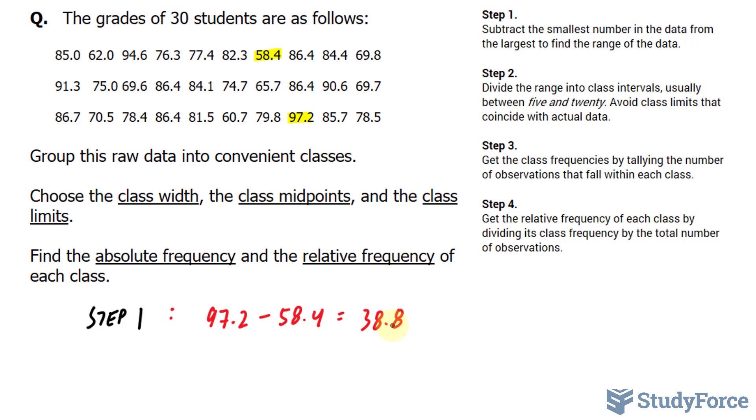In step 2, we need to find the class width. We find the class width by taking this number and dividing it first by 5 and then by 20. This will give us a good idea on how big our classes should be. As stated here, to find the class intervals, we usually start between 5 and 20. So let's go ahead and divide this by 5 and this by 20.